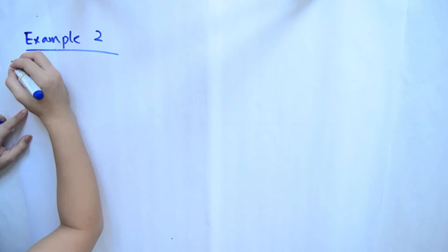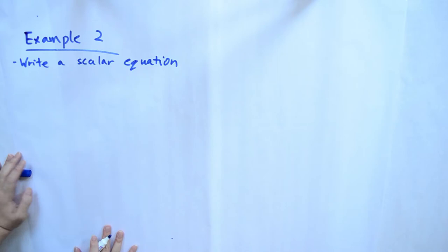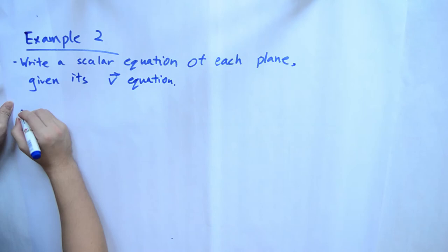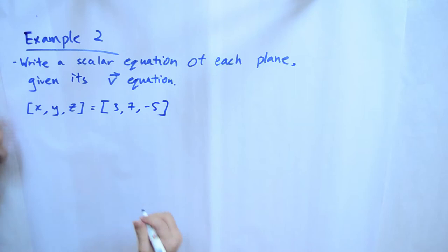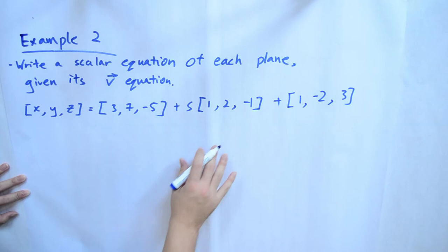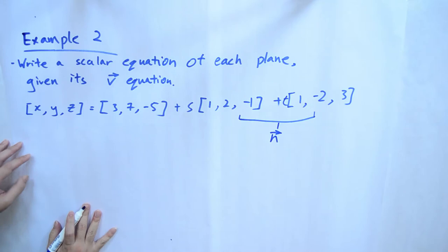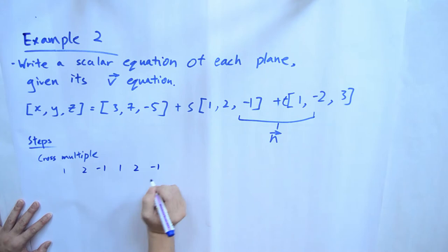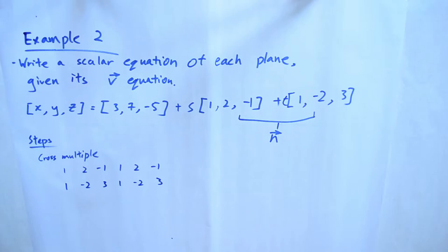The next example is more complicated: we are asked to determine a scalar equation from a given vector equation. We need to understand the vector equation first, then find the normal vector to form the scalar equation. The unknown values s and t are non-parallel direction vectors parallel to the plane. They can be multiplied together using the cross-product method to form the normal vector. To apply the cross-product, we place the s group above and the t group below, then cross-multiply.